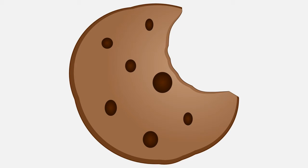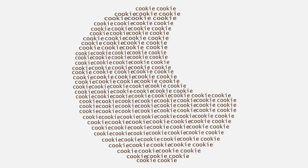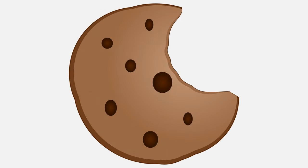Cookies are small files that websites leave on your web browser. Cookies allow websites to remember users' behaviors and preferences on a given website. They enable a lot of the features that web users like. For example, cookies allow websites to remember whether or not you're logged in with your user account. Cookies also allow shopping websites to remember what items have been placed in a user's shopping cart. Furthermore, cookies are simple text files, so they can't contain any code that would run a program.